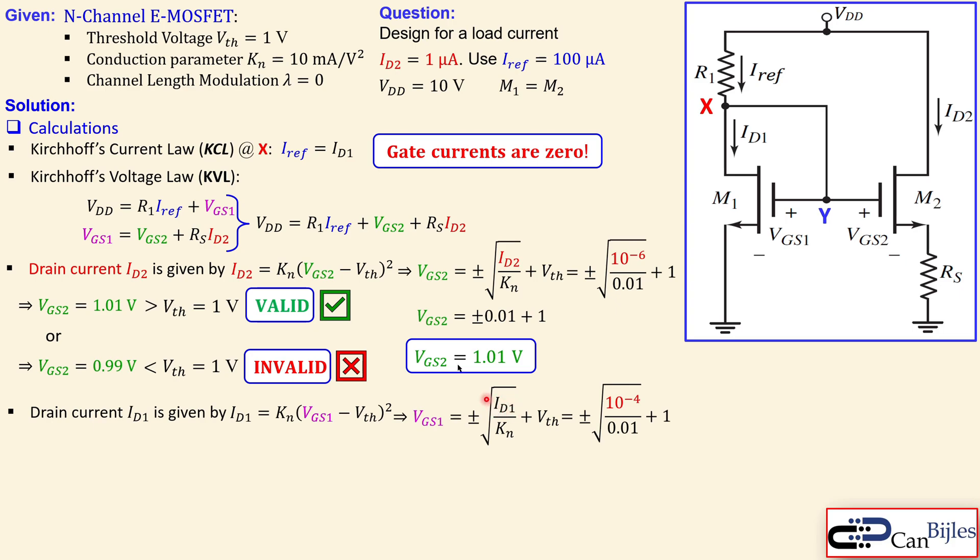Now let's substitute also the values here. ID1 here is, remember, the Iref, and that was 100 microamps, which is 10 to power minus 4. Now again the same analysis, you get now plus or minus 0.1 plus one.